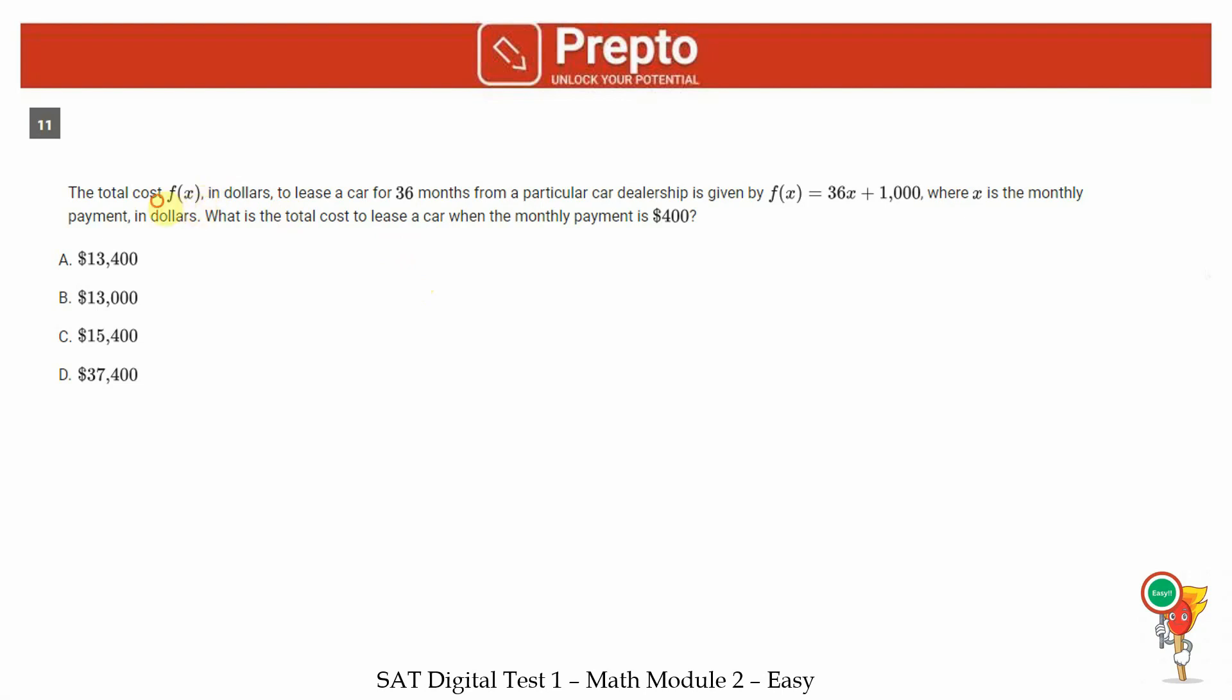Eleventh question is a function question. Total cost f of x to lease a car for 36 months from a particular car dealership is given by 36 times the monthly payment plus a down payment of 1000, where x is the monthly payment in dollars. What is the total cost to lease a car when the monthly payment is 400? We just substitute x equals 400 in the equation. Our answer is 36 into 400 plus 1000. This is 14,400 plus 1000, which is 15,400. Answer is option C.